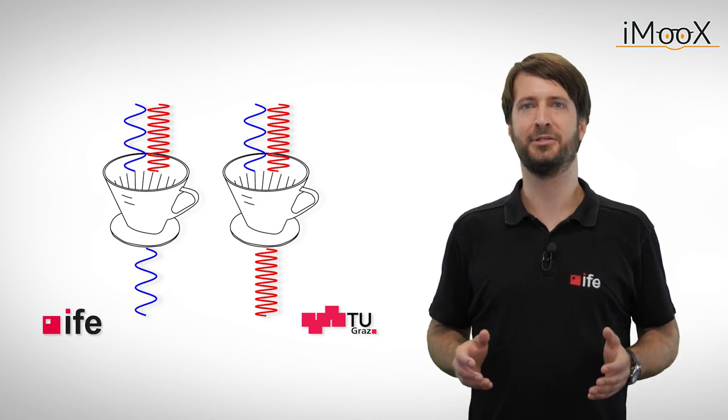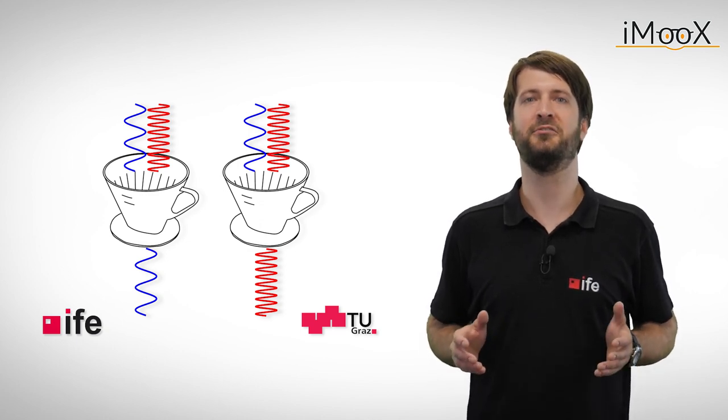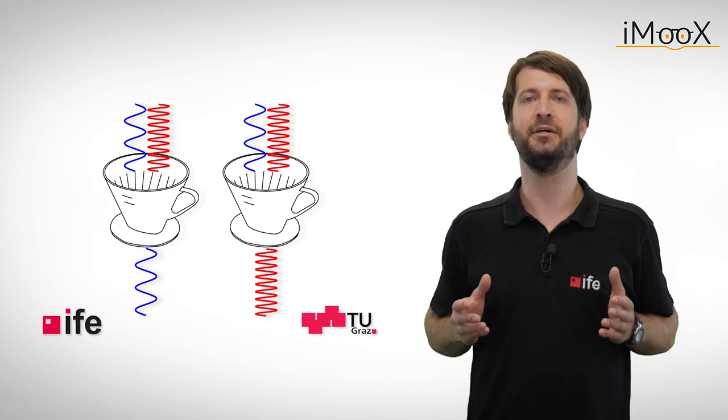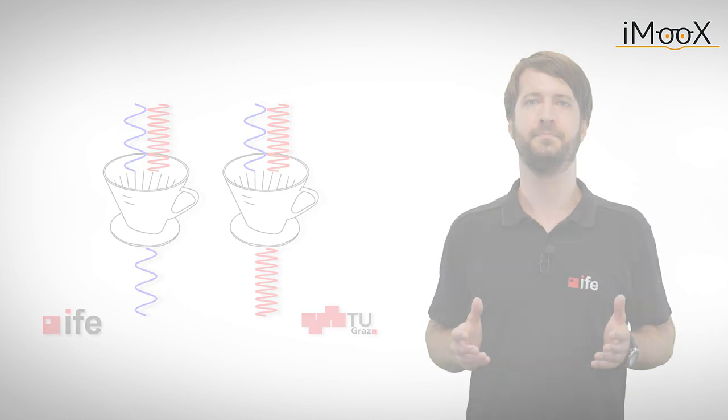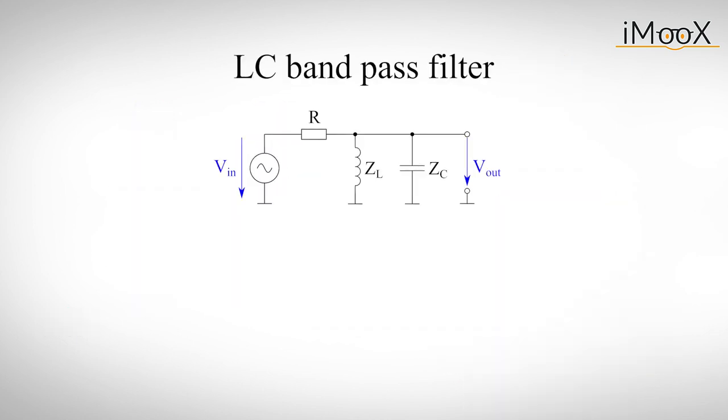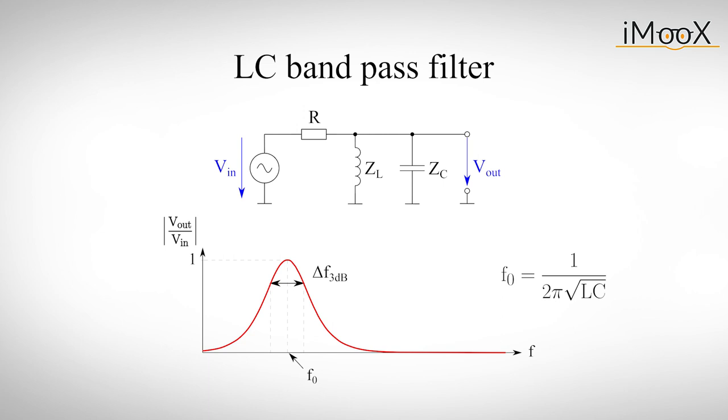Another more outdated but refreshingly simple application of passive filters is the AM receiver of a car radio. If we connect a capacitor and an inductor in parallel, we get the so-called band pass filter. The frequency response shows us its behavior. In practice, losses in the inductor will again limit the sharpness of the peak around the resonance frequency. We can use the pass band of such a filter to demodulate an amplitude modulated signal.